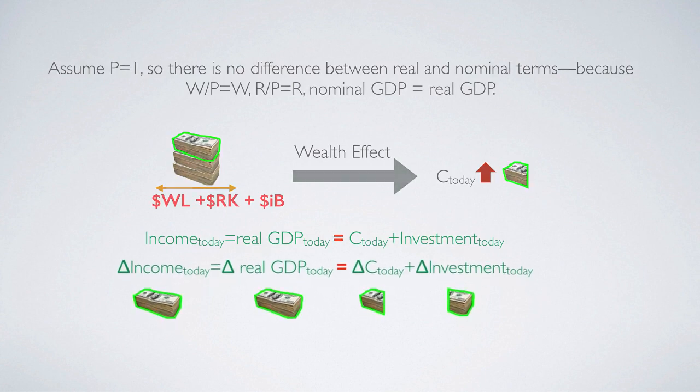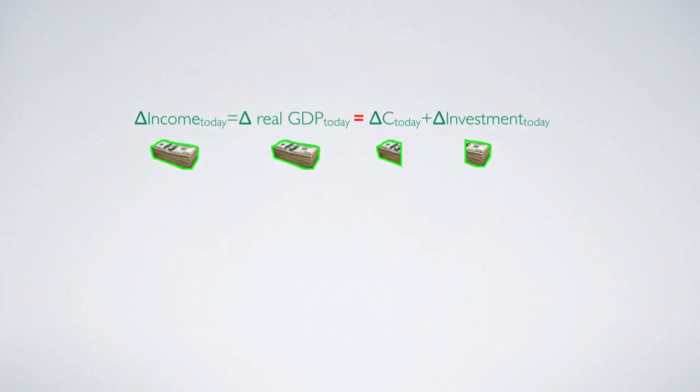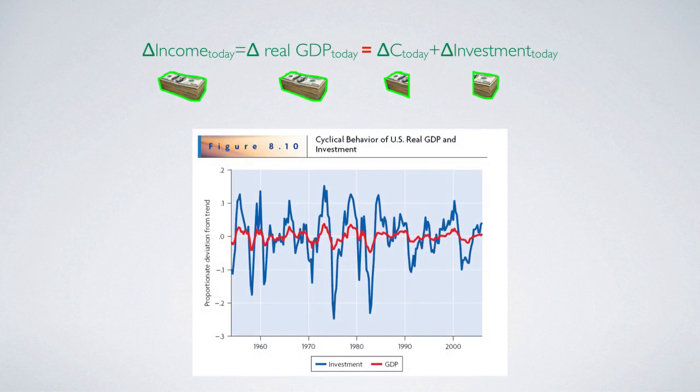Therefore, we will see that when real GDP increases, investment will increase. Always remember that the scenario behind this increase of investment is due to the fact that consumption does not increase as much as the increment of real GDP. Therefore, we are able to observe the procyclical pattern of investment in an economy.